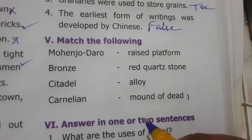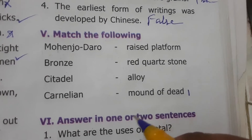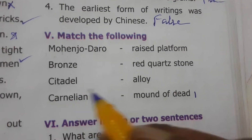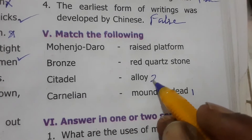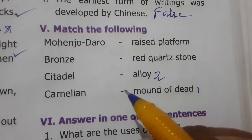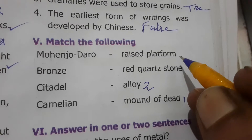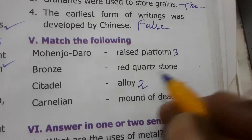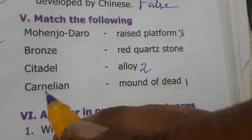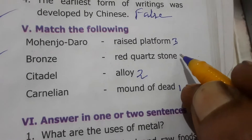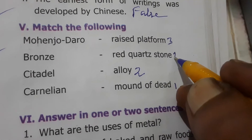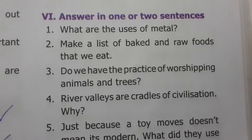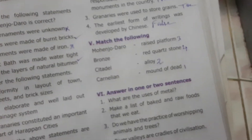Match the following: Mohenjo-daro means 'mound of the dead.' Bronze is an alloy - it is not a pure metal. Citadel is a raised platform where the granaries are located. Carnelian is a red quartz stone used to make ornaments.